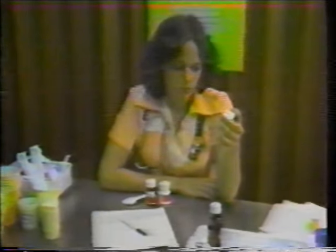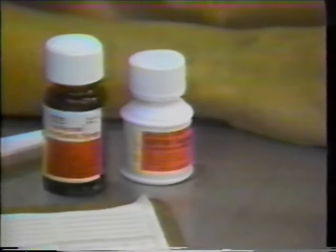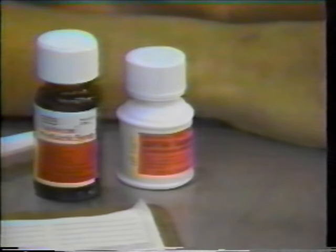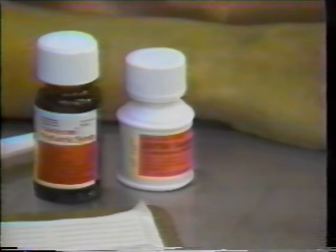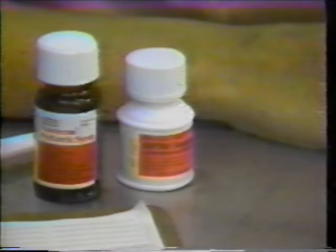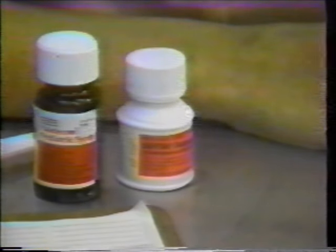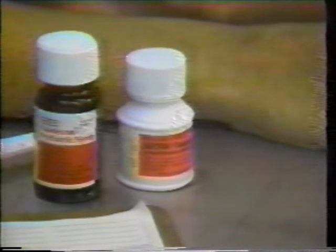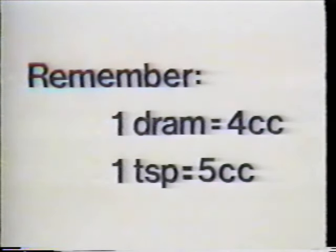Oral medications come in many forms, but the most common for young children is liquid. Always read the label carefully — with pediatric medications, dosages may vary from standardized adult dosages. For the child on a restricted diet, check the composition of the liquid before dispensing. Liquids must be measured very carefully; the difference of one cc over several dosages in 24 hours can result in an extra dose and a possible overdose. Remember: one dram equals four cc, and one teaspoon equals five cc.